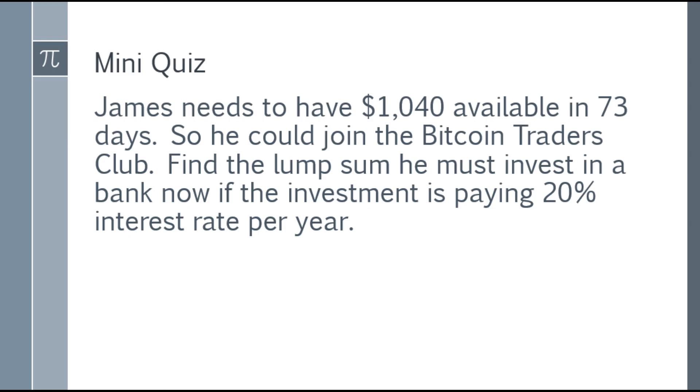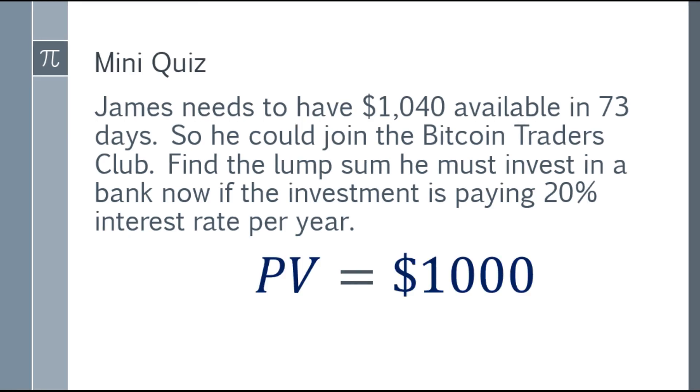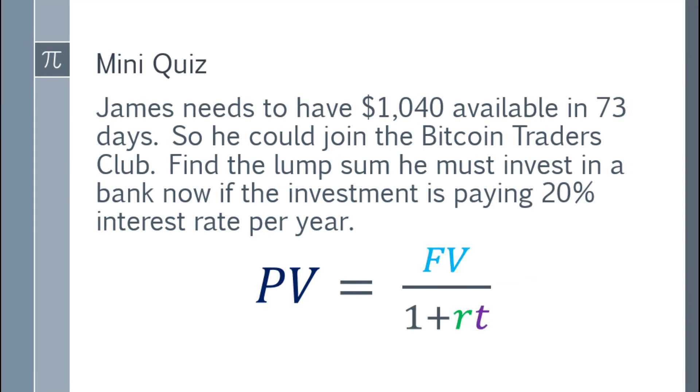Okay, time's up. So the final answer is $1,000. So how did we get that? You have the future value. You have the rate. You also have the time. The only problem is your time is in days. Okay? So no worries about that. So what you'll do is write the formula. And after that, you can substitute the given.